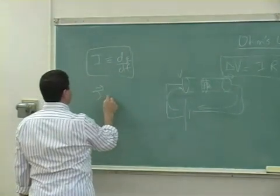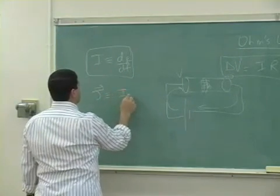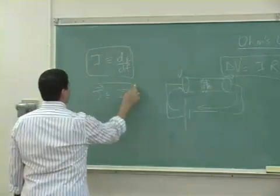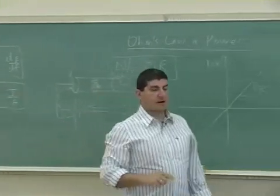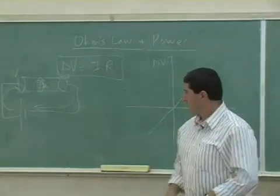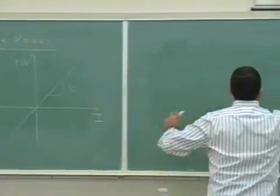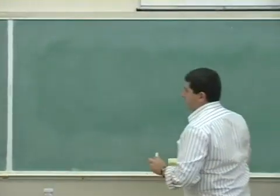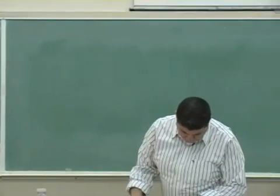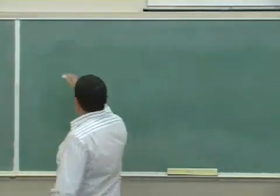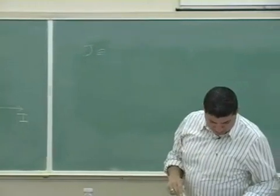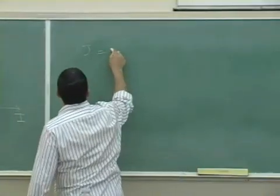The current density J is defined as the current divided by the area A. It is a measure of how much current is flowing per unit area. The current density is also equal to sigma times E.